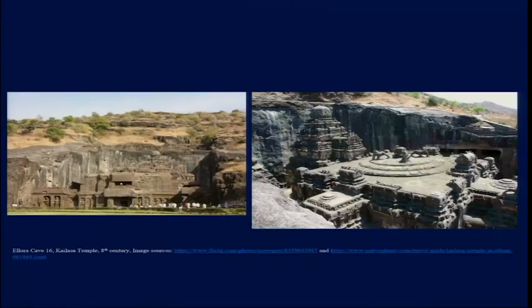Caves 1 to 12 are the Buddhist caves, and they are also the earliest ones in the entire group, excavated between the 5th and 8th century AD. Then there are the Brahminical or Hindu caves, numbered 13 to 29, which developed between the 7th and 10th century AD. The Jain or Jaina caves are numbered 30 to 34, developed between the 9th and 10th century and beyond.